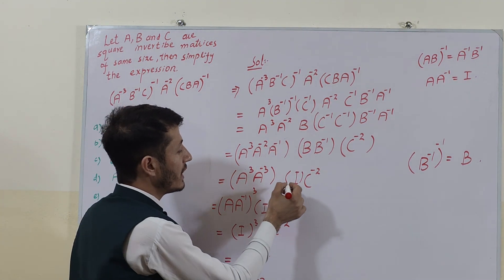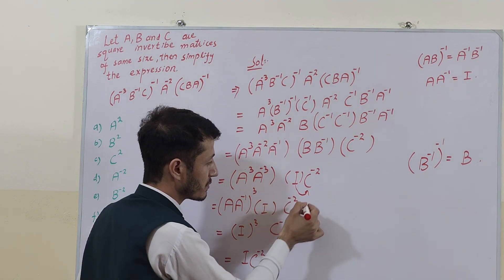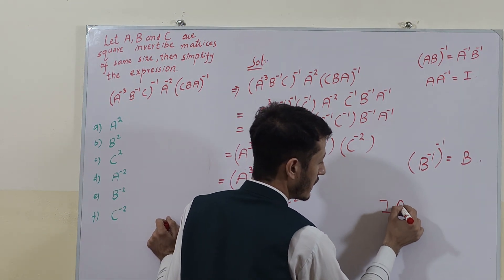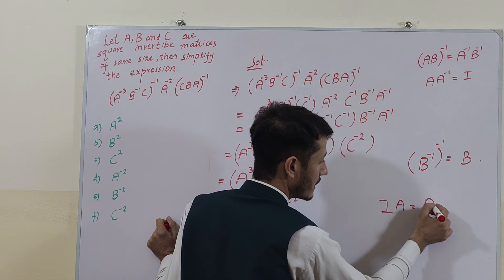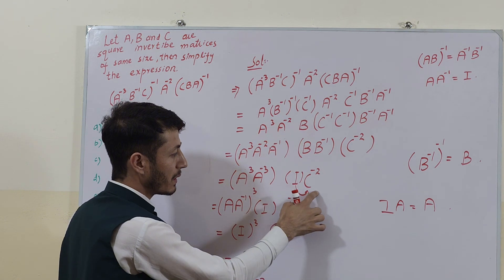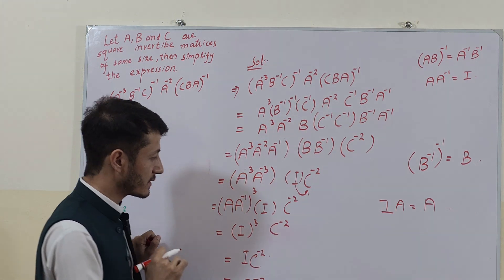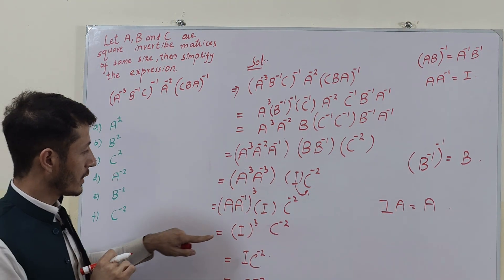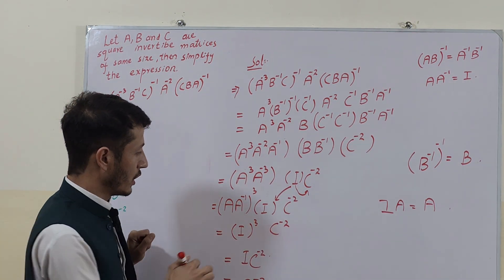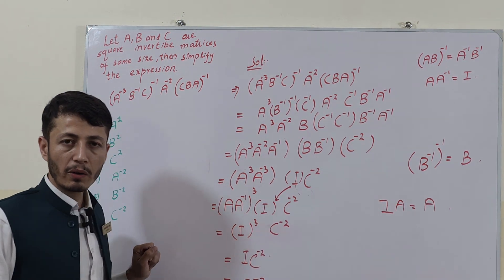If the inverse gives us A, and if an identity matrix is multiplied with a matrix — meaning I times A — then it gives us the A matrix. So if the identity matrix here is multiplied with this matrix, it gives us the same matrix as it is. So again it is multiplied, giving us C^(-2).